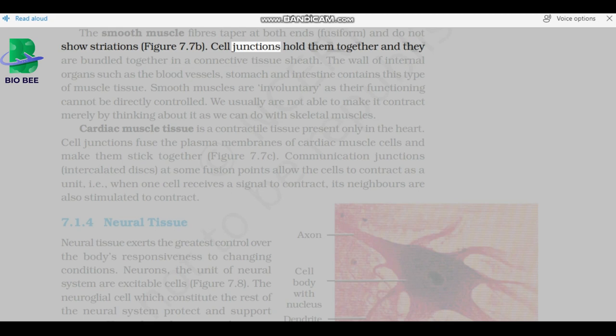Cell junctions hold them together, and they are bundled together in a connective tissue sheath. The wall of internal organs, such as the blood vessels, stomach, and intestine contains this type of muscle tissue. Smooth muscles are involuntary as their functioning cannot be directly controlled. We usually are not able to make it contract merely by thinking about it as we can do with skeletal muscles.